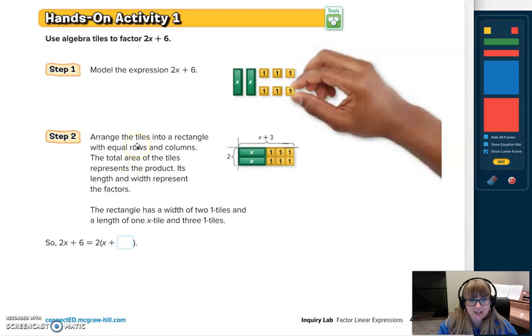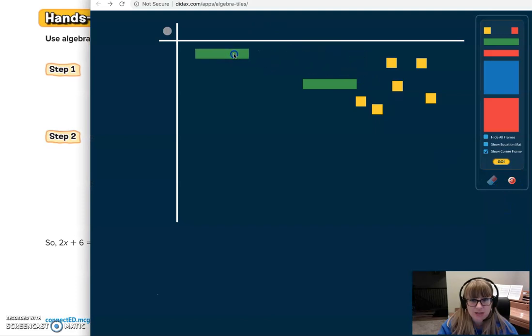I'm going to switch back over to the Didax, and I have my 2x tiles and my 6 unit tiles ready to go. Step 2 says arrange the tiles into a rectangle that has equal rows and equal columns. So look at how they've arranged it here. Let's go ahead and do the same thing. As I'm arranging it, I'm just going to line them up here in the corner. And as I line them all up to create this rectangle shape...